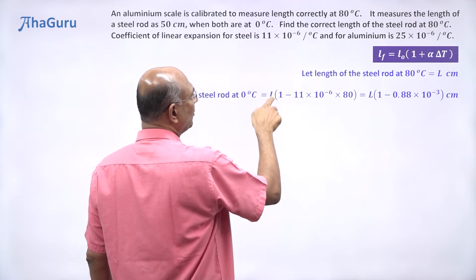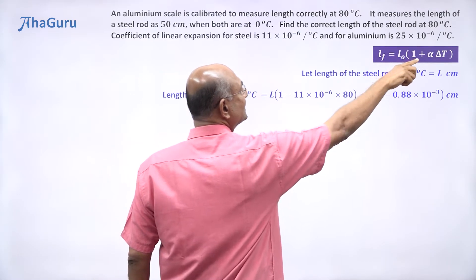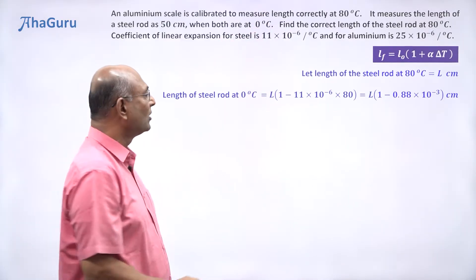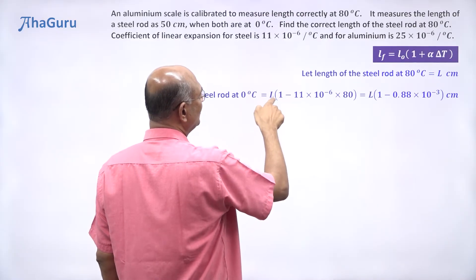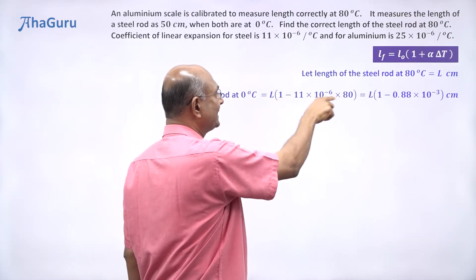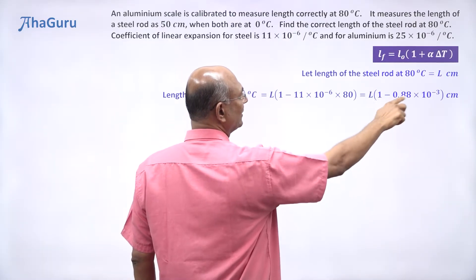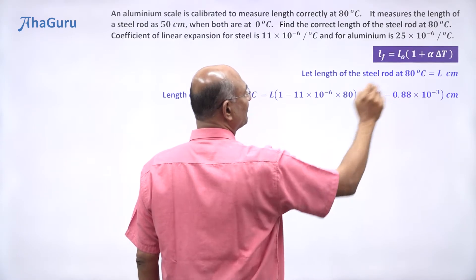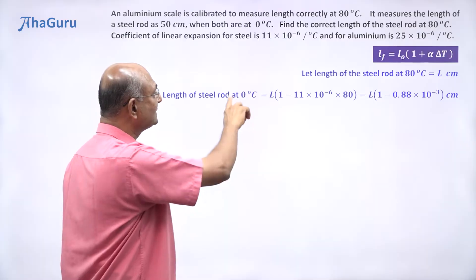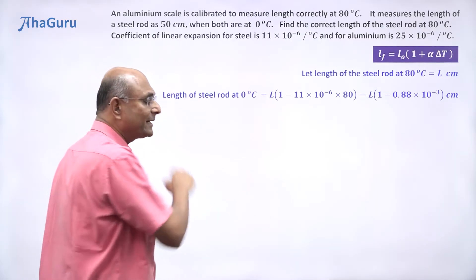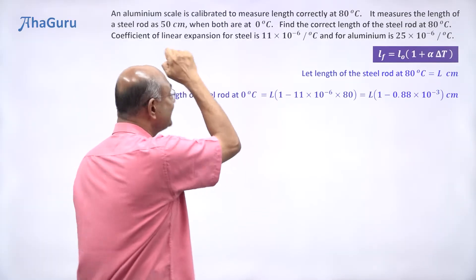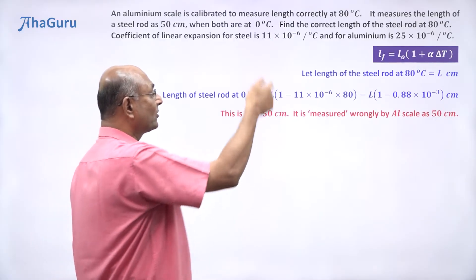When you bring the steel rod to 0 degrees Celsius, its length will reduce. Using this formula, we can say L times (1 minus alpha for steel × 80), because delta T is negative — it was at 80 degrees and has come down to 0. So L × (1 − 11×10⁻⁶ × 80), which gives L × (1 − 0.88×10⁻³) centimeters. This is the length of the steel rod at 0 degrees Celsius. But isn't that 50 centimeters? No — it is not given that this is 50 centimeters. It is given that the aluminum scale measures it as 50 centimeters. The aluminum scale measures things correctly only at 80 degrees Celsius.